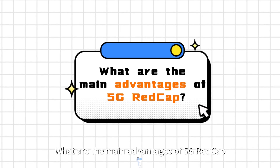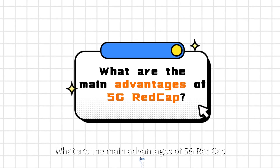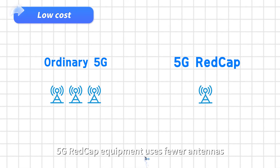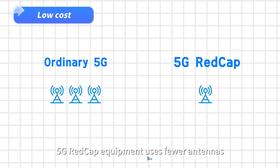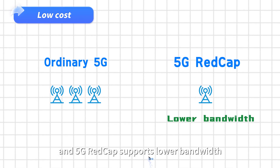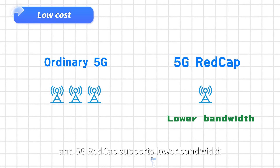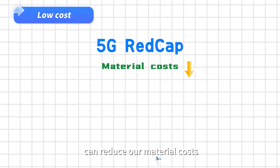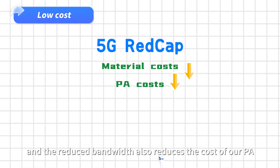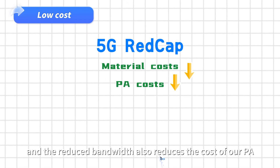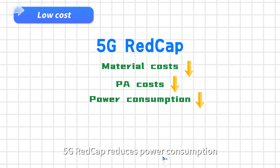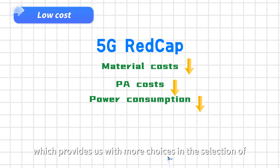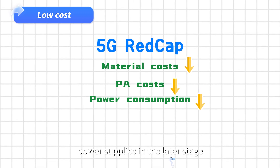What are the main advantages of 5G REDCap? Low cost. Compared with ordinary 5G terminal equipment, 5G REDCap equipment uses fewer antennas, and 5G REDCap supports lower bandwidth. The reduced number of antennas can reduce material costs, and the reduced bandwidth also reduces the cost of the PA. At the same time, 5G REDCap reduces power consumption, which provides more choices in the selection of power supplies.